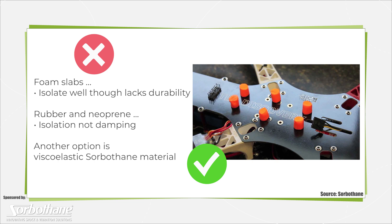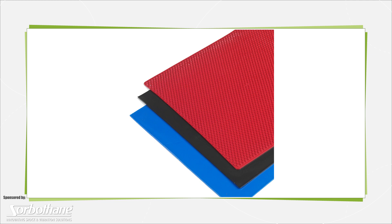In contrast, another option is viscoelastic Sorbathane material from Sorbathane Incorporated, which excels at vibration and shock control, absorbing up to 94.7% of the latter.